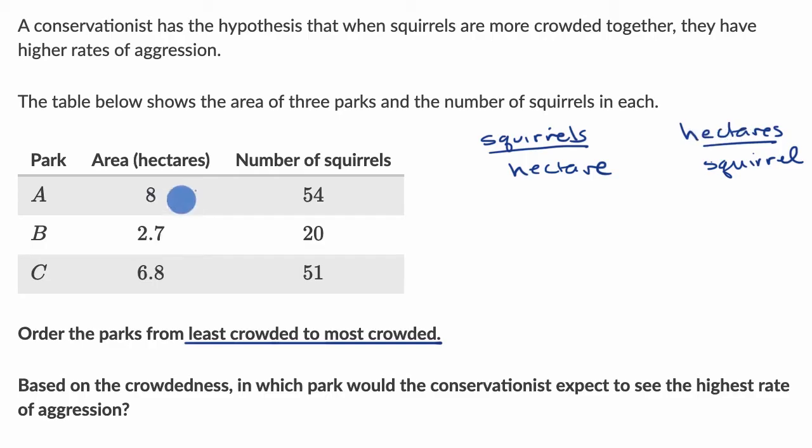When we look at this, the numbers of squirrels are larger than the number of hectares in every scenario. So it might be a little bit easier to divide in this one. Let's calculate the number of squirrels per hectare for each of these parks. First, let's think about park A.